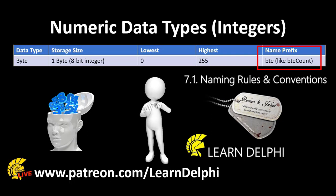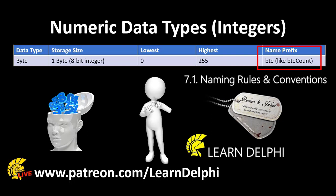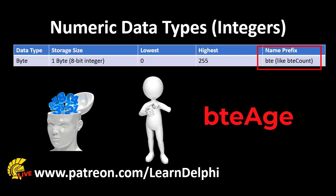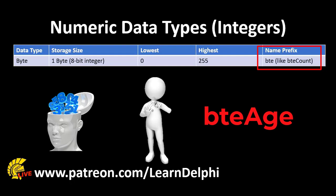You must use whatever is required by your team or what is prescribed in school or college. A suitable name for age will therefore be BTEAge. Notice that this name is typed using camel case with no spaces and special characters. This name must also be unique.